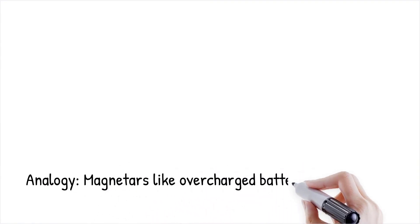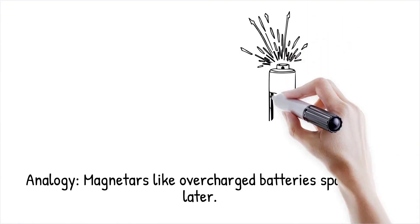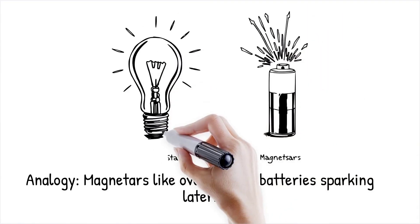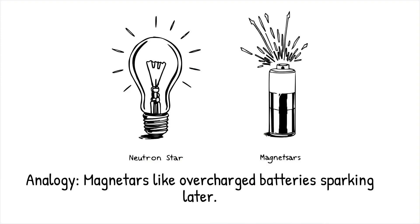If a typical neutron star is like a burned-out light bulb, a magnetar is like an overcharged battery that occasionally sparks, even after it should have run out of energy.